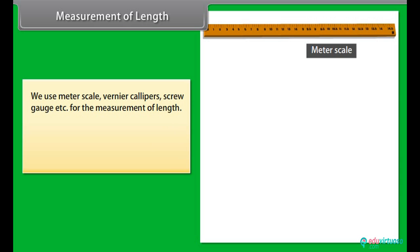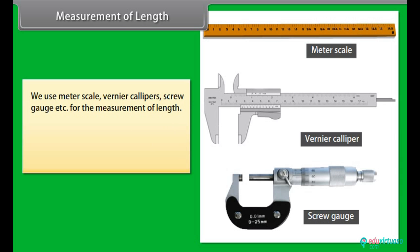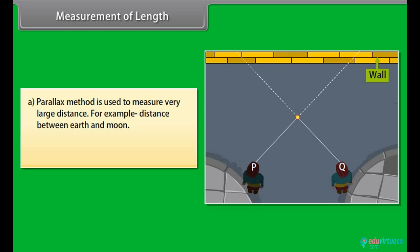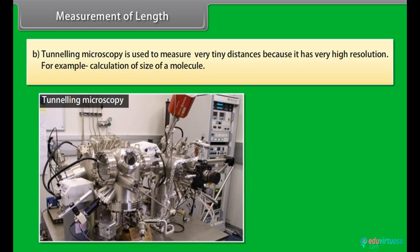Measurement of length. As you know, we use meter scale, Vernier calipers, screw gauge, etc. for the measurement of length. We use some indirect methods for: A. Measuring large distances, and B. Measuring very small distances. A. Parallax method is used to measure very large distance, for example, distance between Earth and Moon. Let us understand with an example. A girl is observing the rod against a wall from two different points P and Q. She notices that the position of the rod seems to change with respect to the wall. This is known as parallax. The distance between P and Q is called basis.